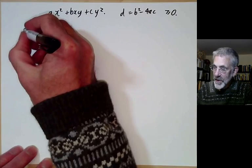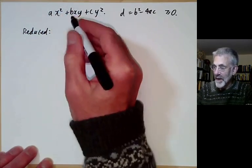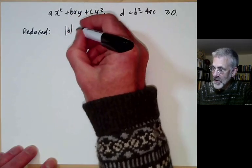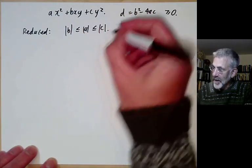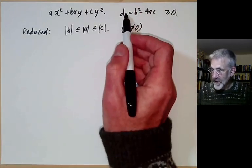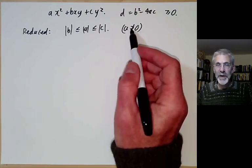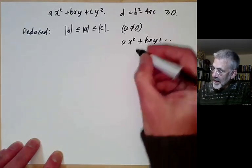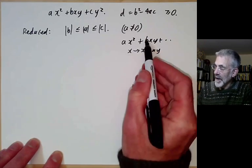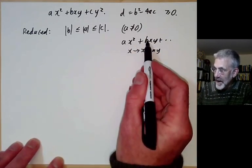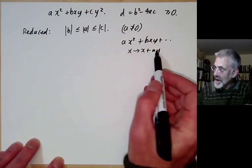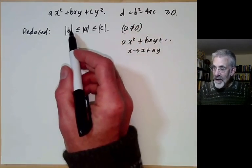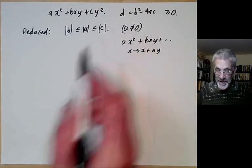We start by recalling that we can make the form reduced — we make a as small as possible and then make b as small as possible, given a, up to equivalence. For a reduced form, we can have |b| ≤ |a| ≤ |c|, provided a is not zero. If a is not zero, then for a form ax² + bxy + something, we can change x to x + ny for a suitable n, and this will change b by 2na. So we can make b between −a and a, as long as a is non-zero. If a is zero, doing this doesn't change the value of b. So every form is equivalent to a reduced form satisfying this condition, as long as a is non-zero.